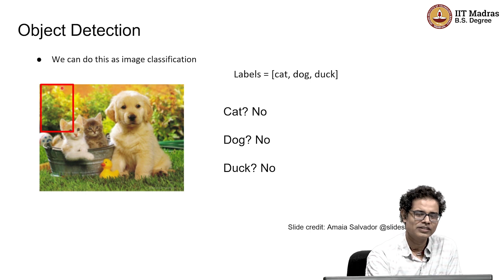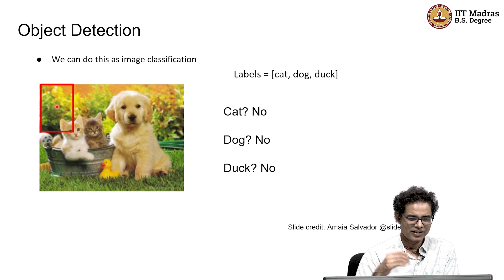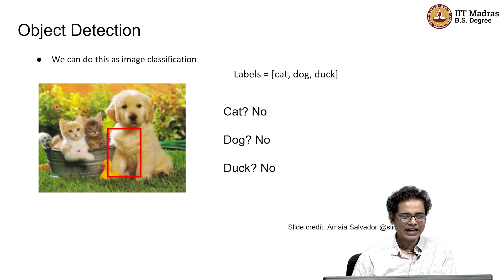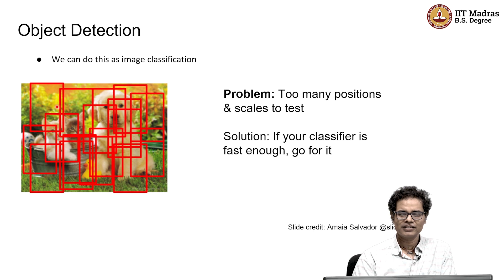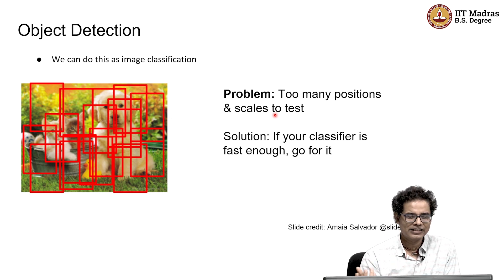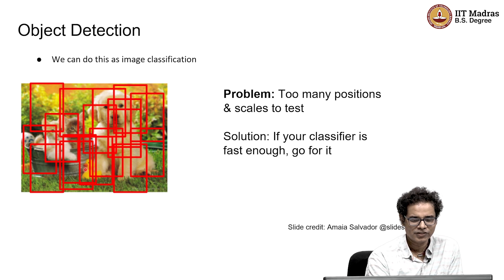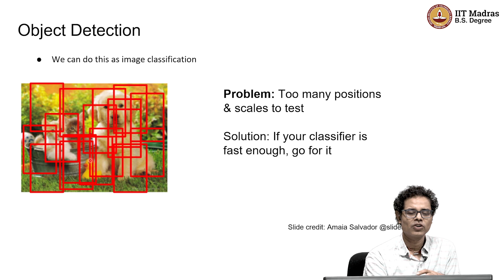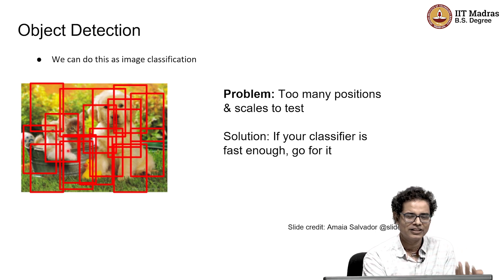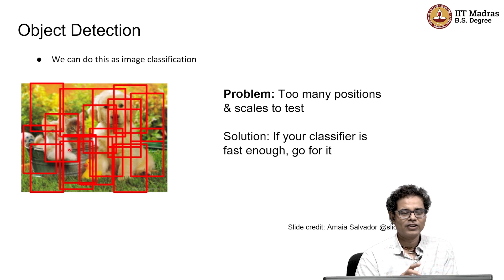The idea is: take a window, ask what object is within it, and then slide that window across the image. Wherever we put the window, there may or may not be an object, so we need to slide and scan. But the problem is how many positions and scales we need to test. Position means moving the window around, and scale means we can't just use a fixed size window because objects can be at various scales — some very small, some very large. So we have to scan throughout the image and also try various scales and aspect ratios of the window, which becomes a very huge, computationally almost infeasible problem.